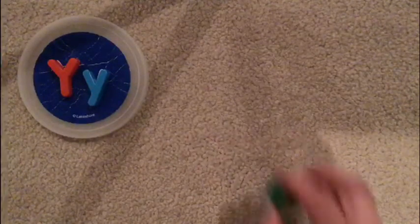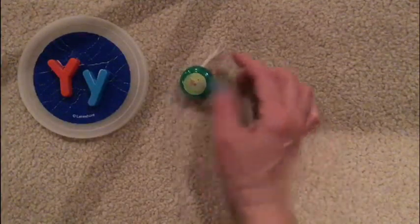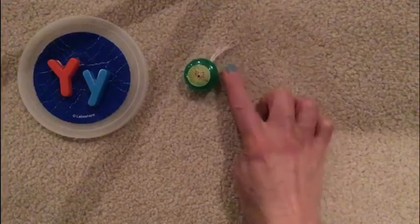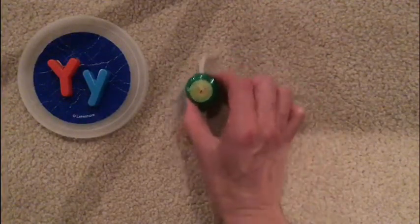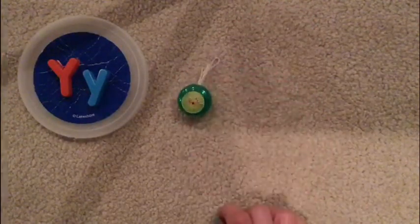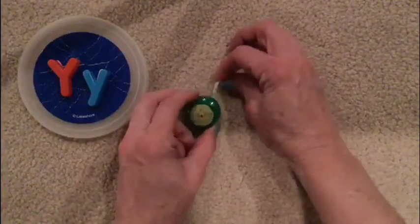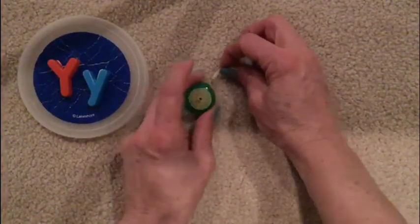Let's see what things start with the Y sound. I have a yo-yo. It has a string and it can yo-yo up and down, rolling off of the string down and back up. A yo-yo.